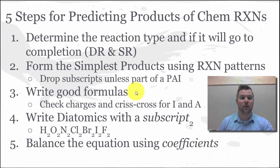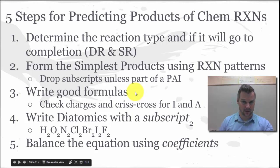And then step 4, write your diatomics. If we have diatomic elements like hydrogen, oxygen, nitrogen, etc., those if they are elements written by themselves would need to have the subscript 2. And finally you're going to balance your chemical equation using coefficients so that we follow the law of conservation of mass.